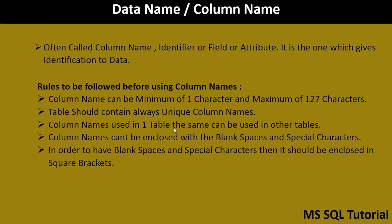First, let's learn what a data name is. A data name is often called a column name, identifier, field, or attribute. It gives the identification of data. In the previous example, we have column names: employee ID, employee name, salary, date of joining, and gender. That row represents the column names.